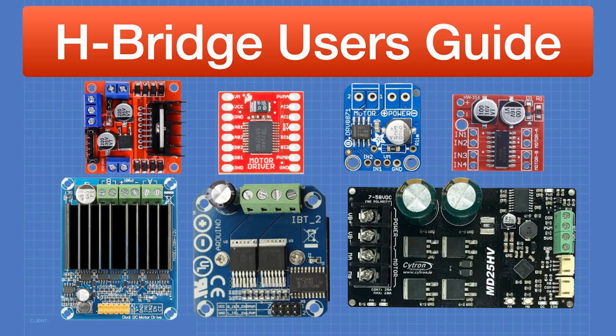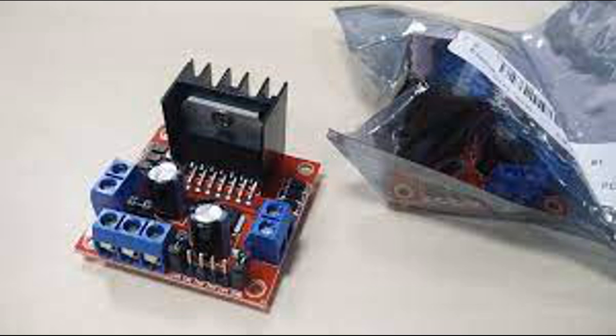In summary, the H-bridge motor driver allows for direction control by changing the path of current through the motor, speed control by using PWM to adjust the average voltage, and braking and stopping by shorting or disconnecting the motor as needed. This setup is widely used in DC motor control for applications where precise directional and speed control is necessary, such as in robotics, automotive, and industrial automation systems.